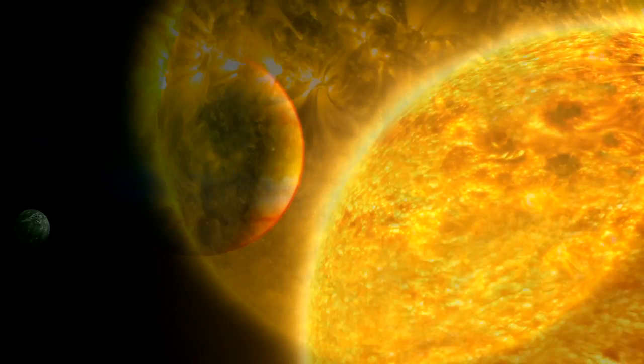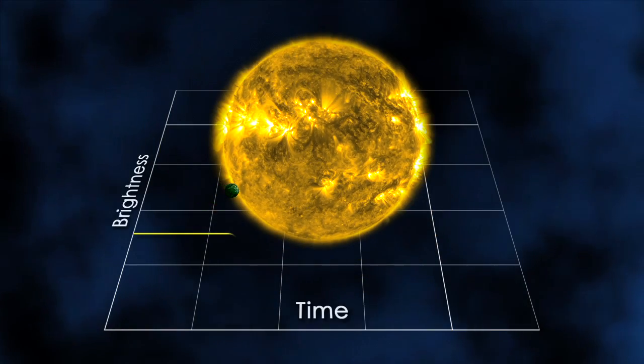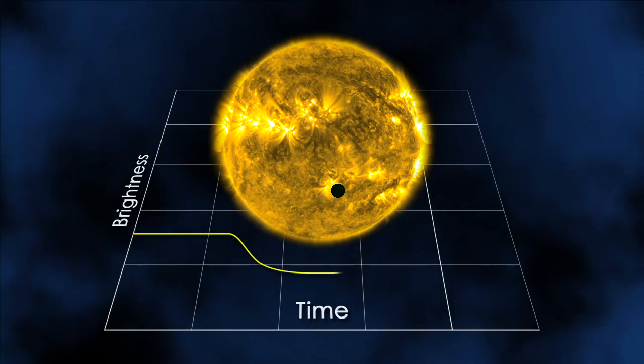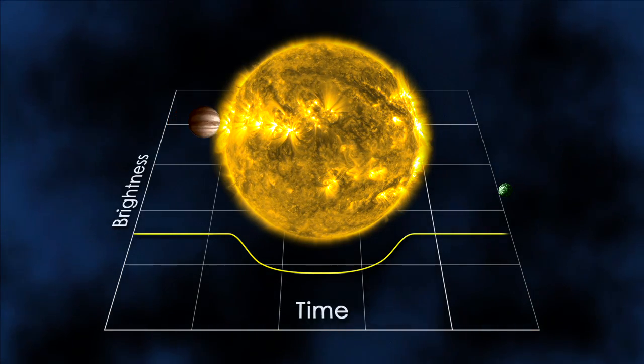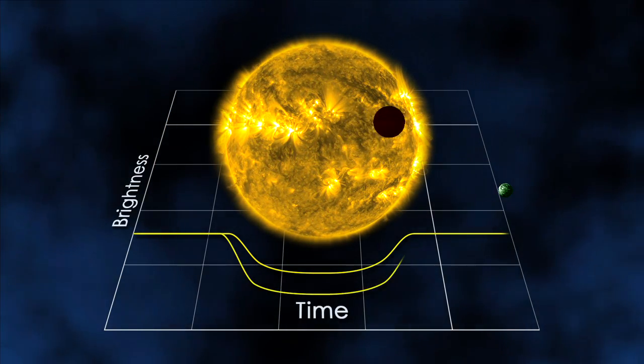For instance, when an exoplanet passes in front of its star, or transits, it blocks a fraction of the star's light and causes a dip in brightness. Large planets block more light, so the size of the dip can be used to determine the size of the planet.